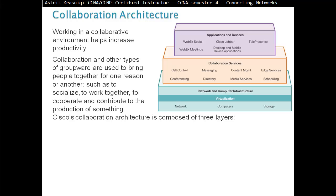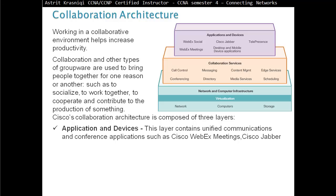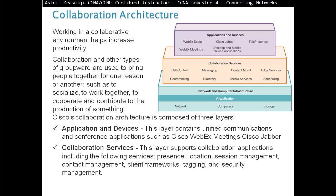The Cisco Collaboration Architecture is composed of three layers. First, Applications and Devices: this layer contains unified communication and conferencing applications such as Cisco WebEx Meeting and Cisco Jabber. Second, Collaboration Services: this layer supports collaboration applications including presence, location, session management, contact management, client framework, tagging, and security management.